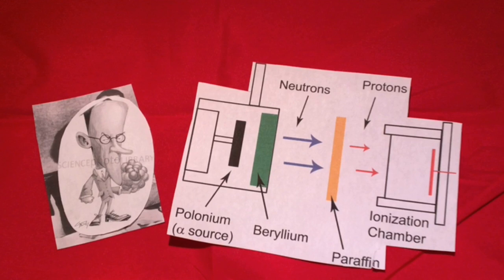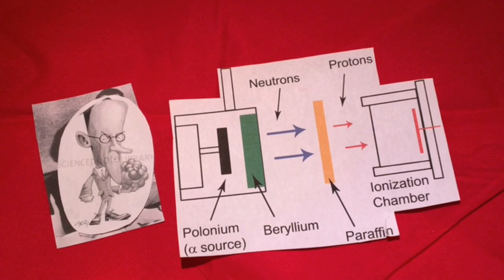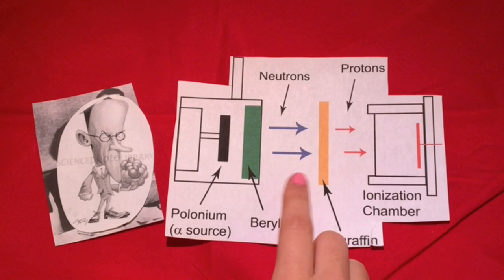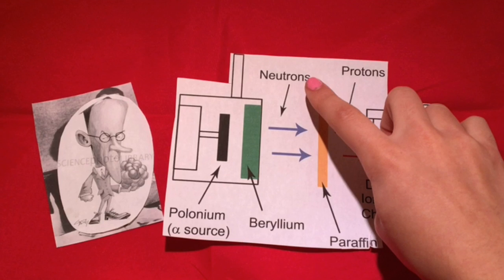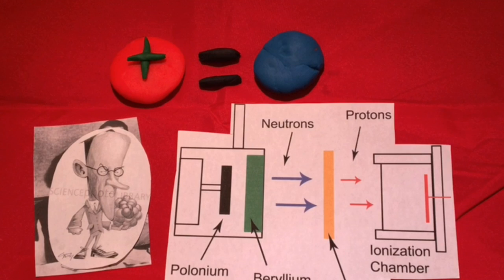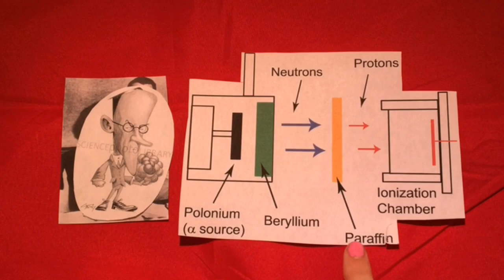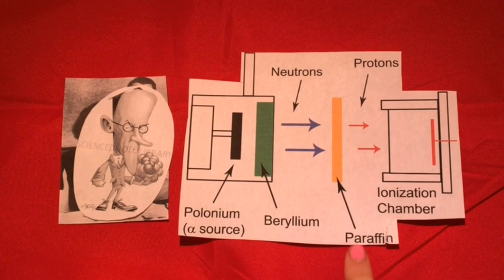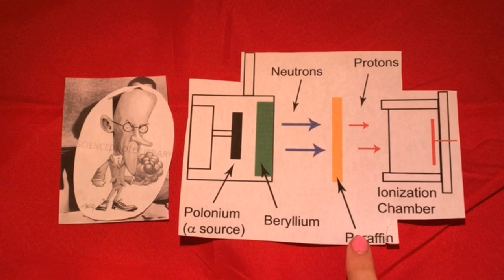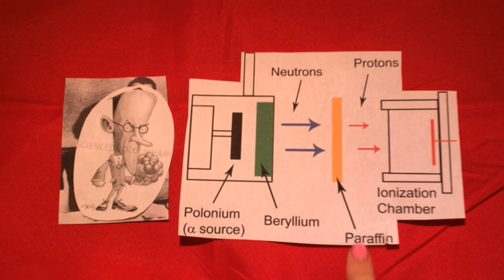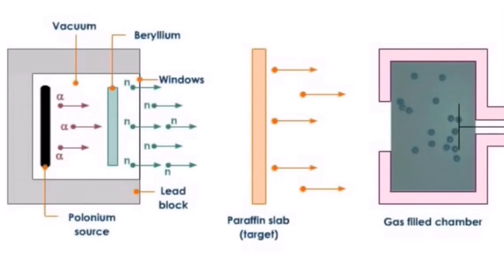In 1932, he tried similar experiments himself and became convinced that the radiation ejected by beryllium was, just as he thought, a neutral particle about the mass of a proton. He also tried other targets in addition to the paraffin wax, including helium, nitrogen, and lithium, which helped him determine that the mass of the new particle was just slightly more than the mass of the proton.